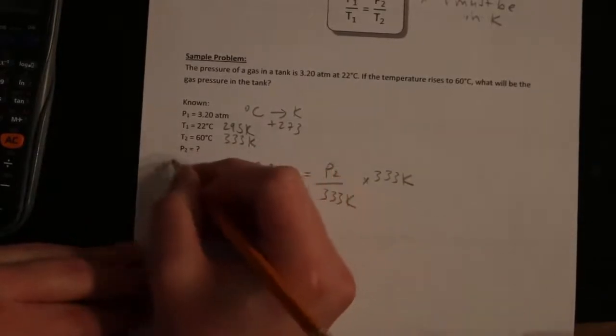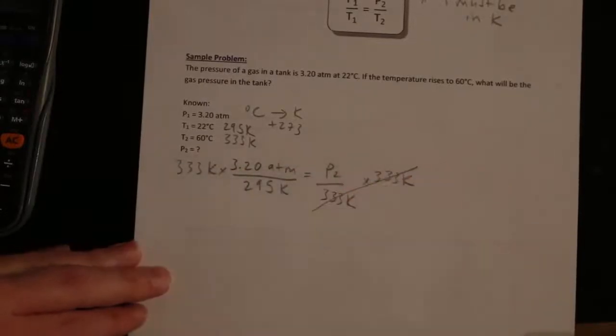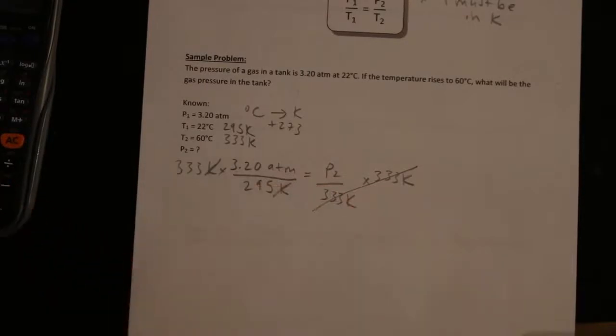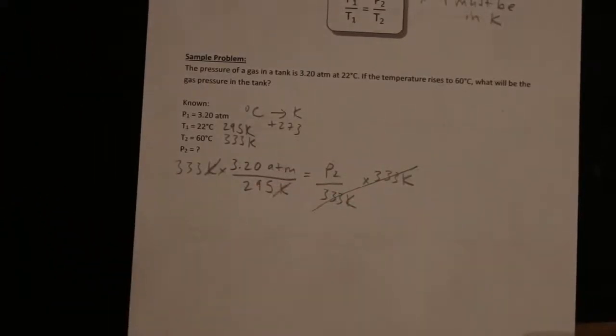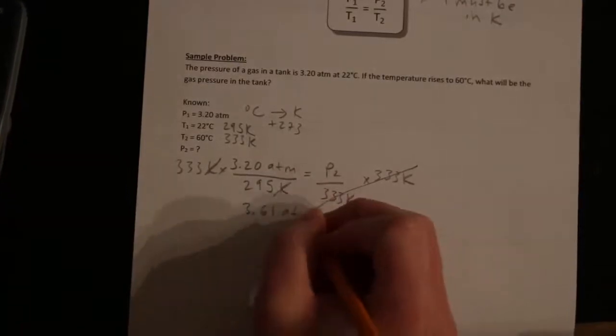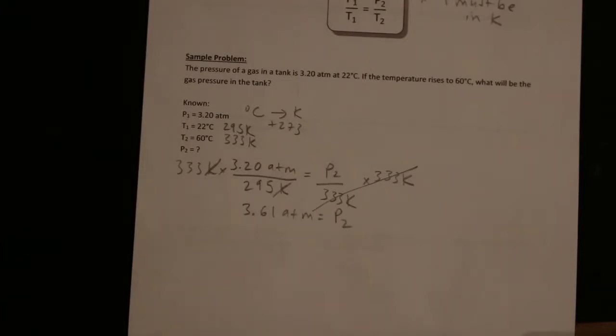Multiply both sides by 333 K. It cancels completely on that side. And on this side, the K cancel. So I just enter into my calculator: 333 multiplied by 3.20, divided by 295. And then I get 3.61 atm equals pressure 2.